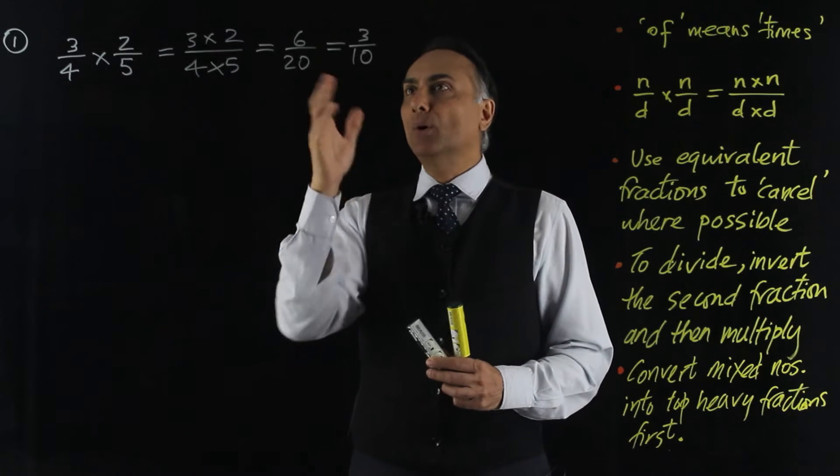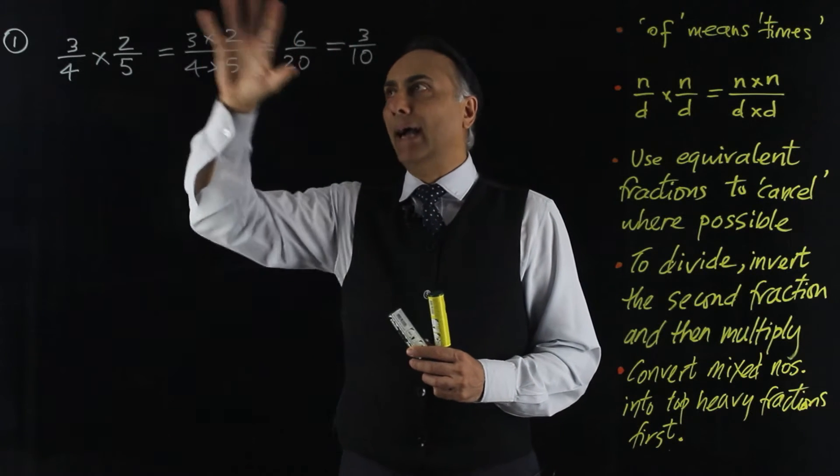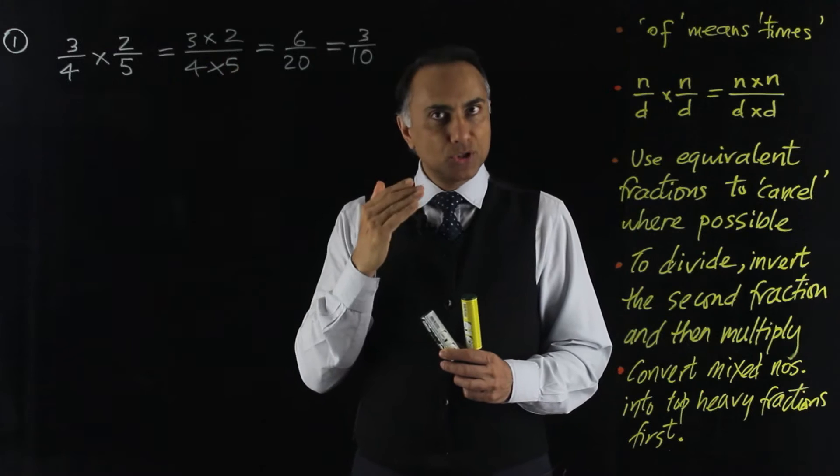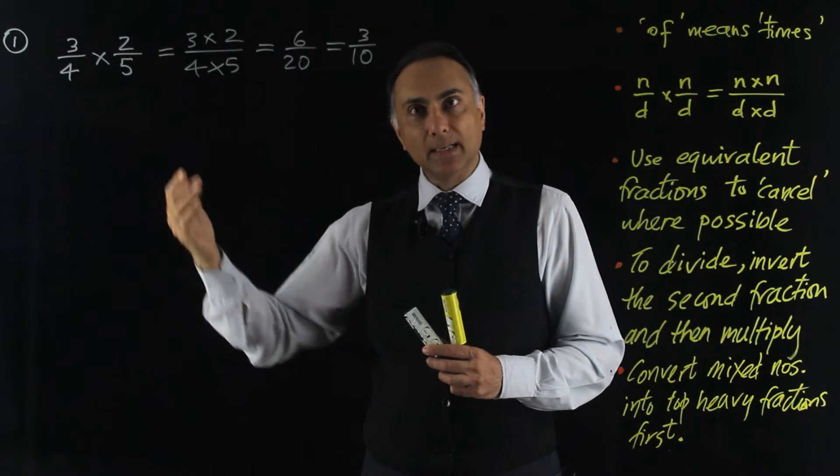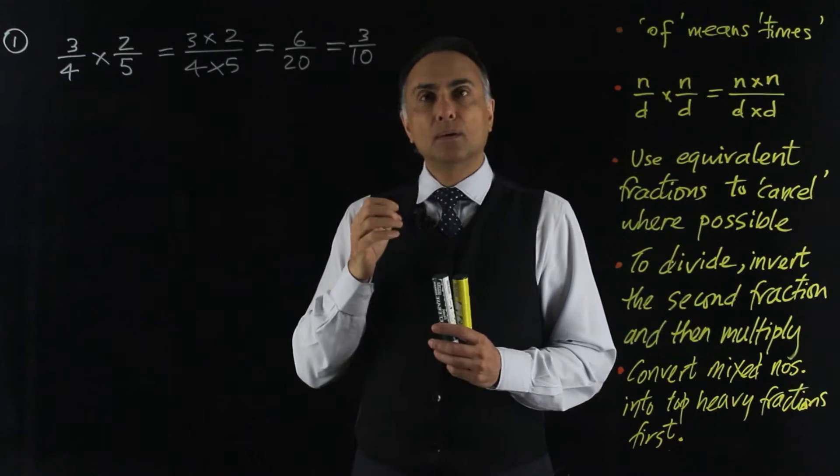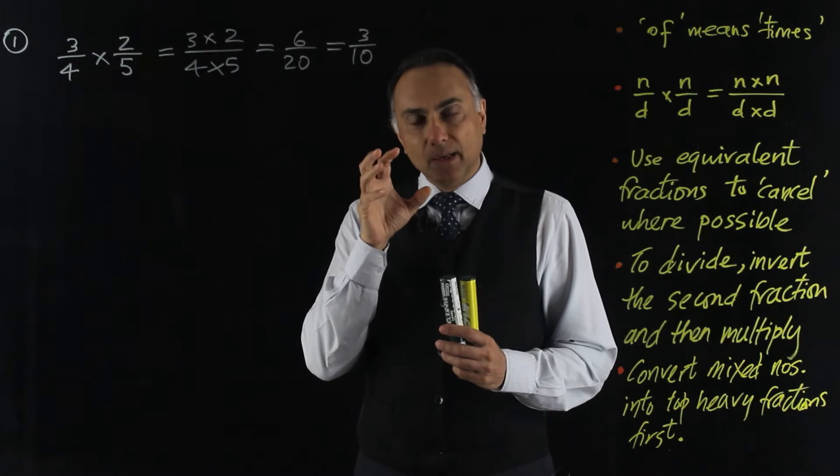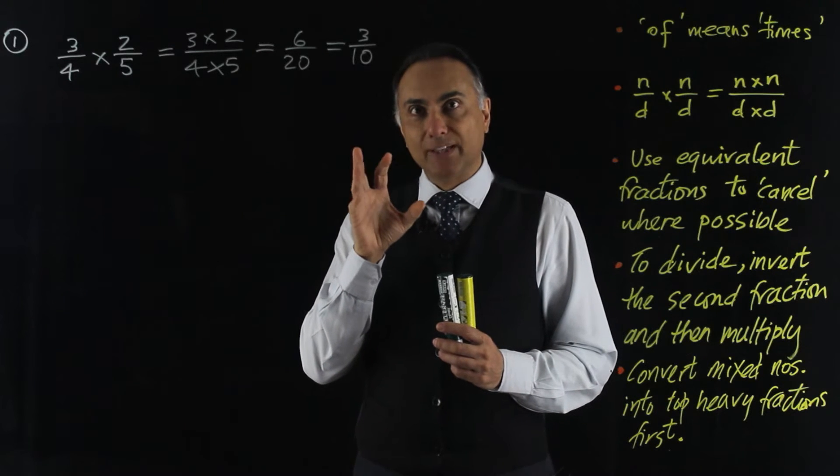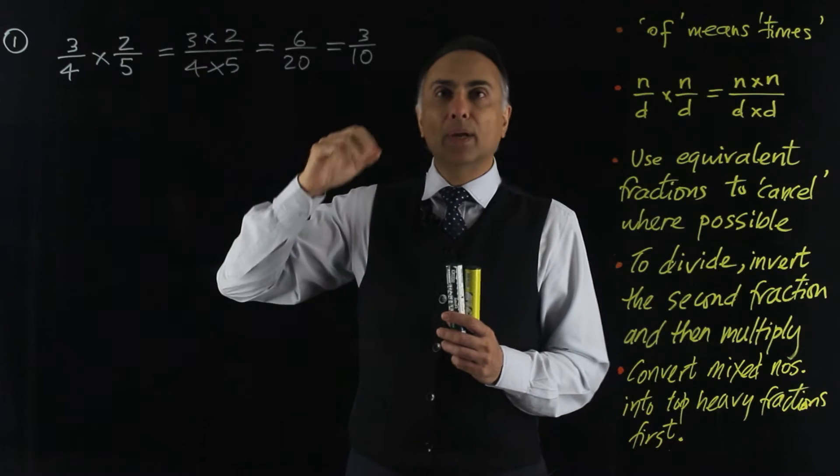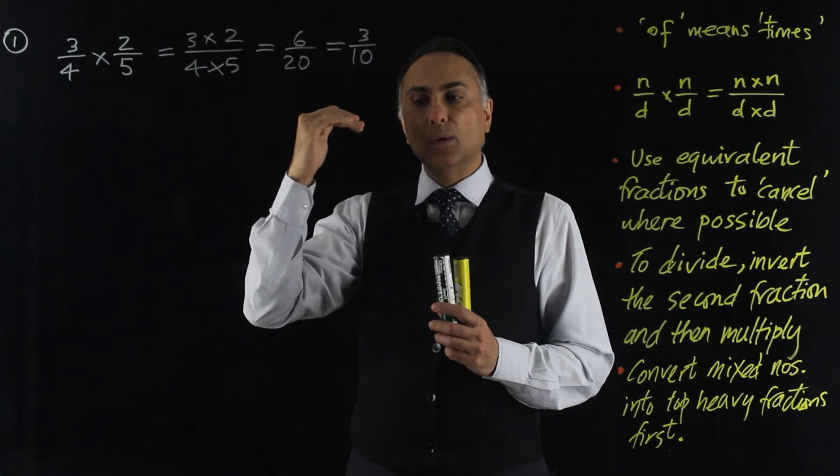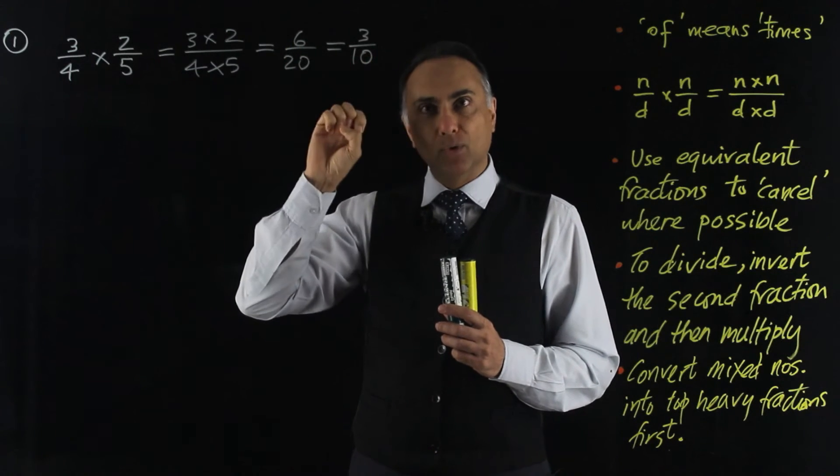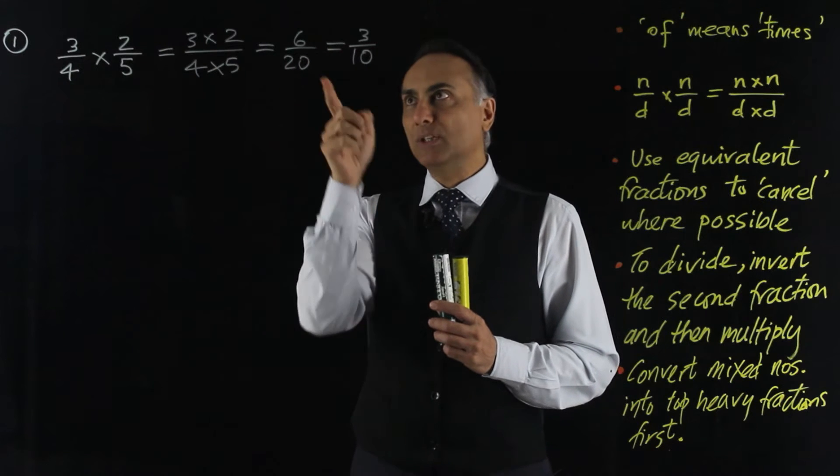Now, I could have reduced numbers at an earlier stage and I'm going to show you that because I will then do that in the remaining examples. What we do is we again use the principle of equivalent fractions. That in a fraction, you can divide numerator and denominator by the same amount in order to reduce the numbers.